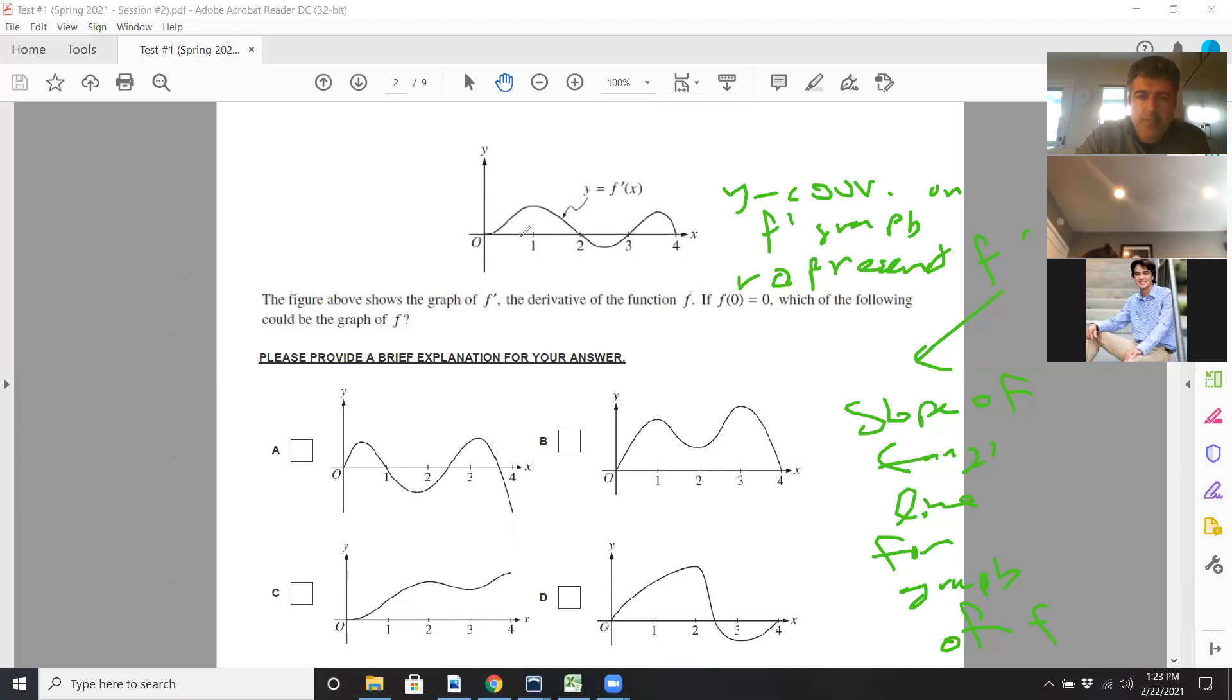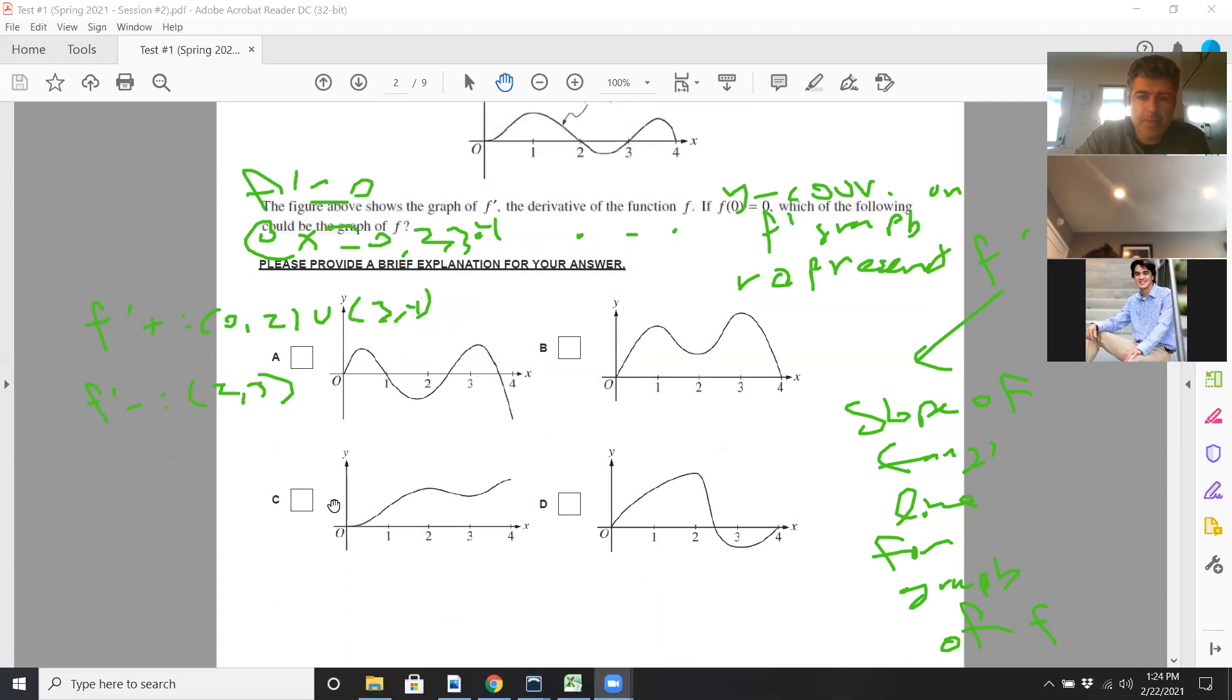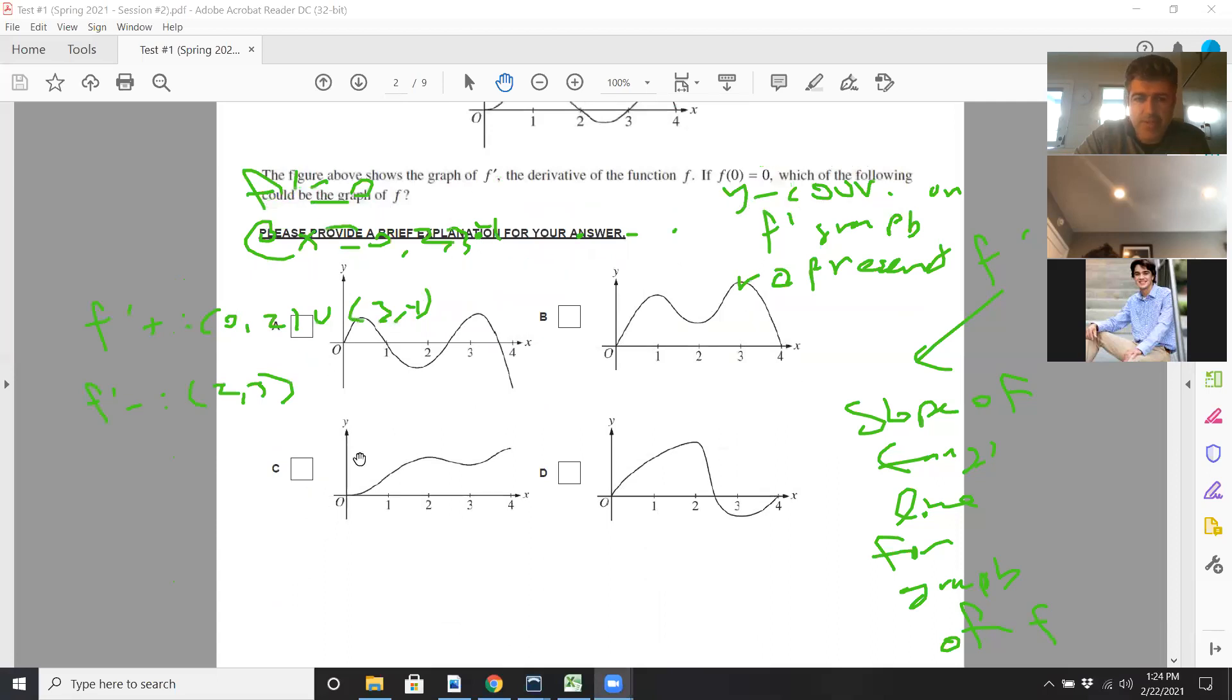So we see that f prime equals 0 at 4 places here. f prime equals 0 at x equals 0, 2, 3, and 4. And f prime is positive from 0 to 2, and from 3 to 4. f prime is negative from 2 to 3. So you've got to find the original graph that shows those tangent lines doing that. That's why the answer is going to be, for me it's C, but it's going to be this graph right here.